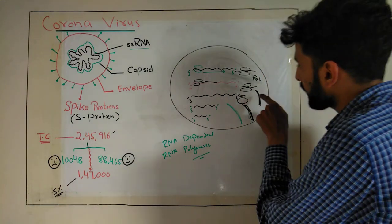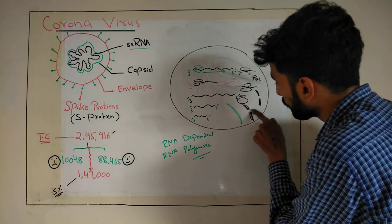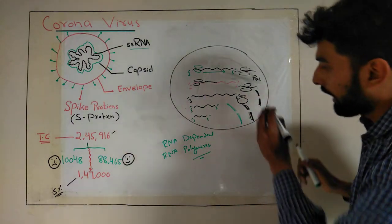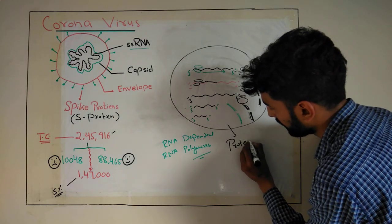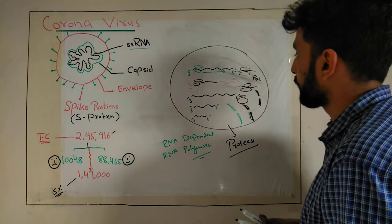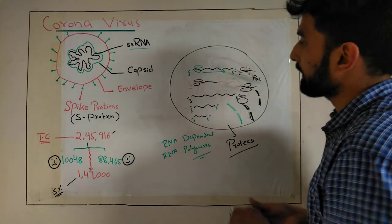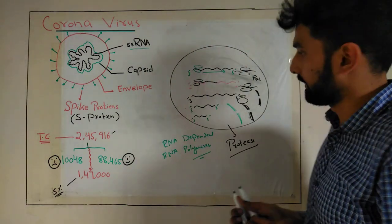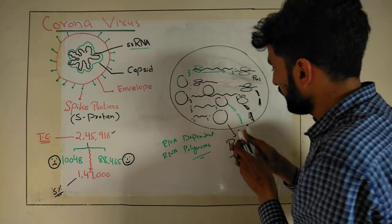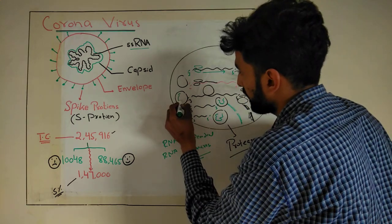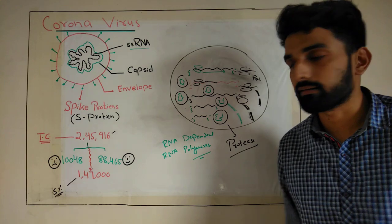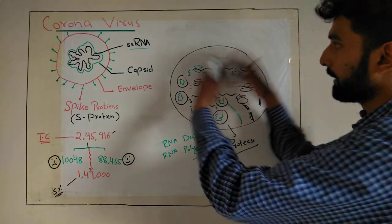These large inactive proteins have to be cut into small active fragments. To convert these large immature proteins into small active proteins, an enzyme called protease is required. Protease is present in our normal cells and will help cut them into active proteins. These active proteins and the viral RNA will then assemble to form a new coronavirus inside the host cell — the proteins get assembled and the RNA is packed inside.